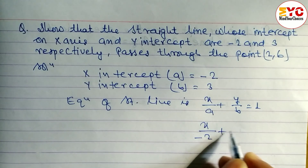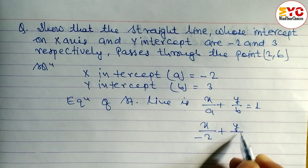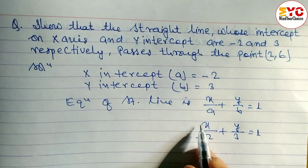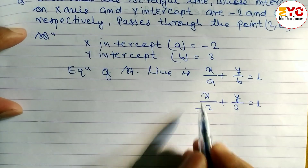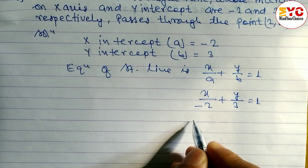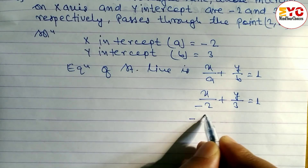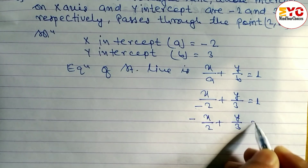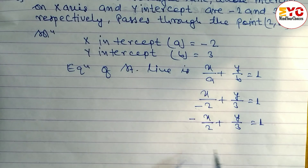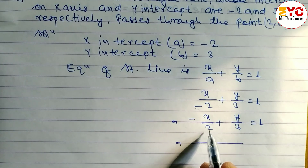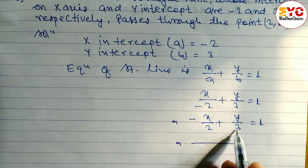The value of a is minus 2 and the value of b is 3, so we can write x/(−2) + y/3 = 1. This minus can be written in the numerator, so we write −x/2 + y/3 = 1.